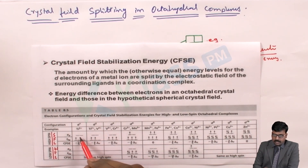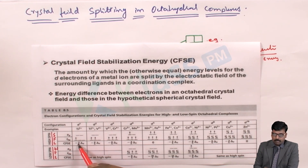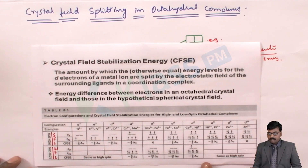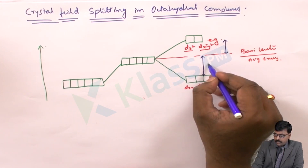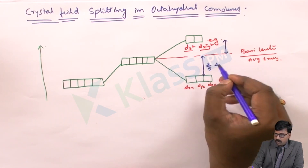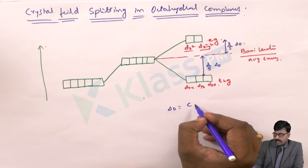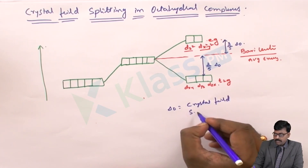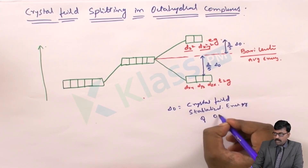For Ti³⁺, the T2G level is filled with one electron. The crystal field stabilization energy associated with this electron is -2/5 ΔO. In the crystal field splitting diagram, the energy difference is 2/5 ΔO below the barycenter and 3/5 ΔO above it. ΔO denotes the crystal field splitting of the octahedral complex.